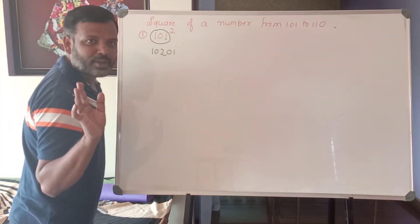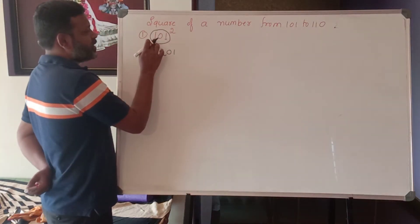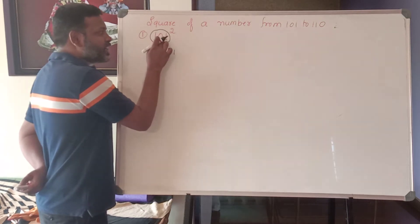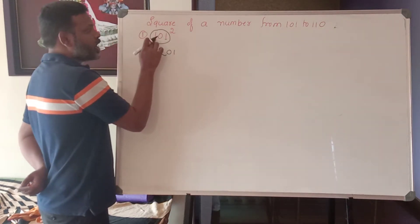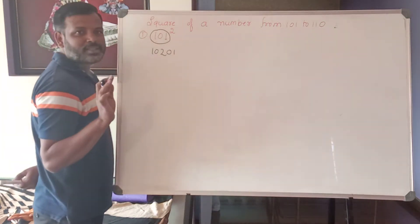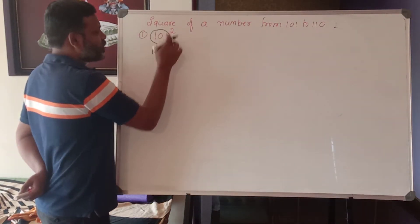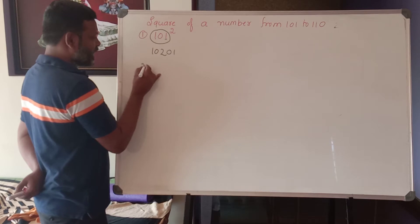The given number is 101, 101 plus last digit, what is that? 1. 101 plus 1 is nothing but 102. And last number is 1. 1 square is 01. Look at second one here.